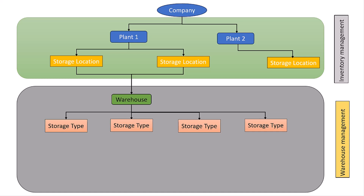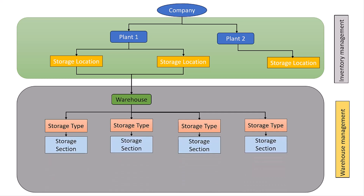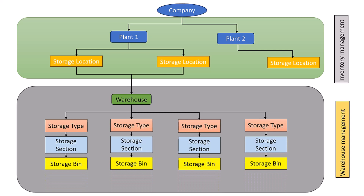Storage type is a physical location in a warehouse. A storage type is further divided into storage sections. A storage type must have at least one storage section — it is simply a subdivision of storage types so that we can further enhance the storing capacity of a warehouse.